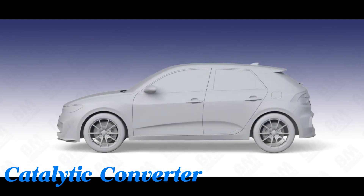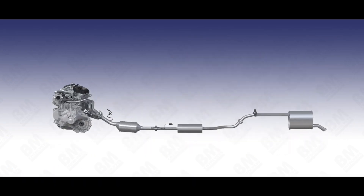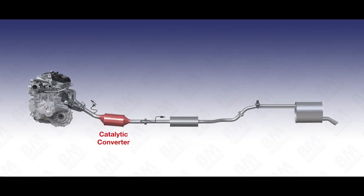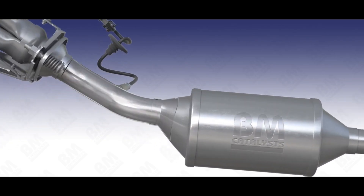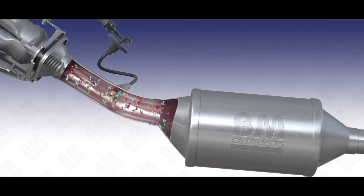The catalytic converter contains a coated ceramic honeycomb matrix mounted in the exhaust system, providing increased surface area for chemical reactions. Pollutants like carbon monoxide, nitrogen oxides, and hydrocarbons pass over catalysts like platinum, palladium, and rhodium that convert them into benign gases like carbon dioxide and water vapor.